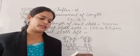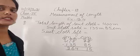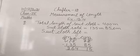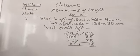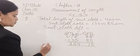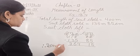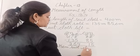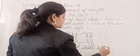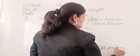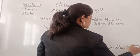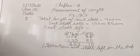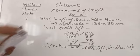The question was: how much suit cloth was left in the shop? Therefore, 264m 15cm of suit cloth is left in the shop. You can pause it here and note it down in your notes.